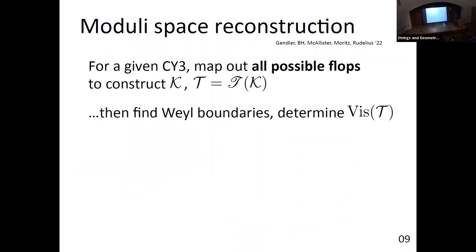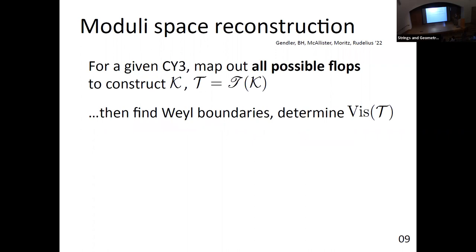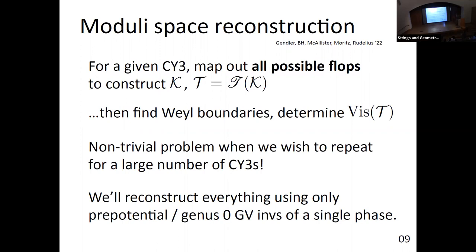In order to test whether the sub-lattice or tower weak gravity conjecture is satisfied, we have to know what the extended moduli space is. Even without Weyl flops, we have to get this extended Kähler cone and the dual coordinate image of it. Then we might want to go beyond this and think about the Weyl-extended moduli space that gives a broader region where there are still BPS black holes — a stronger test. It turns out we can solve this problem using just the prepotential and genus-zero GV invariants for a single phase, and use that to reconstruct the other phases.